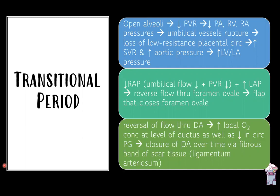With decreased right atrial pressure and increased left atrial pressure, flow through the foramen ovale reverses, closing the flap on the left atrial side like a trap door. The ductus arteriosus also closes: aortic pressure rises and pulmonary artery pressure falls, reversing flow. Increased local oxygen concentration and decreased circulating prostaglandins cause the ductus arteriosus to close over time, forming the ligamentum arteriosum — a fibrous band of scar tissue.